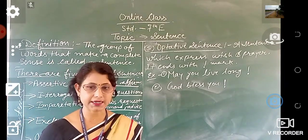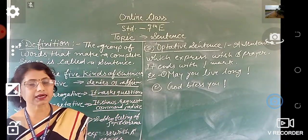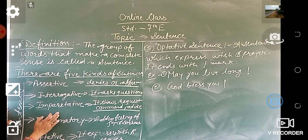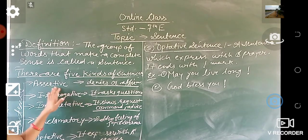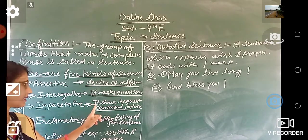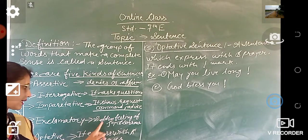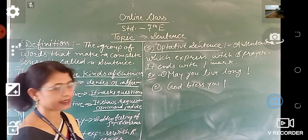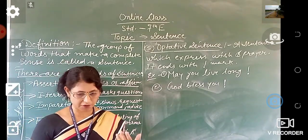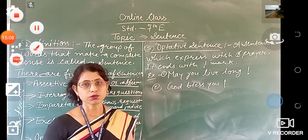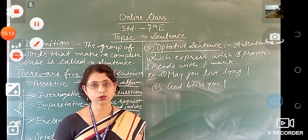To revise: the definition of a sentence is a group of words that gives a complete sense. There are 5 kinds of sentences: assertive (denies or affirms), interrogative (asks questions), imperative (shows request, command, and advice), exclamatory (sudden feeling of joy and sorrow), and optative (expresses wish and prayer). If you have any problems you can ask me, and complete the activities in your fair copy. Good luck!